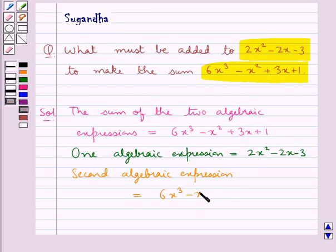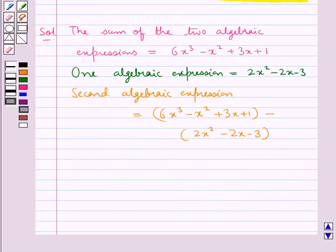That is 6x³ - x² + 3x + 1 minus 2x² - 2x - 3. Now we write these expressions column wise by writing the like terms in one column. So we have 6x³ - x² + 3x + 1. Now the second expression that is 2x² - 2x - 3 we write it below this expression in such a way that the like terms are in a column.